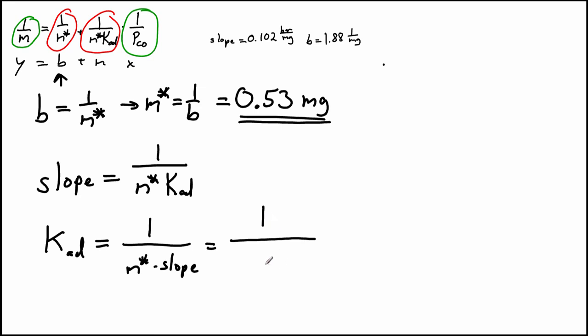So K is just going to be 1 over M-star times the slope. So we have 1 over M-star, which we said was 0.53 milligrams. And the slope we said was 0.102 bar per milligram.